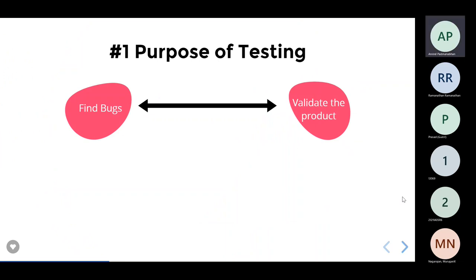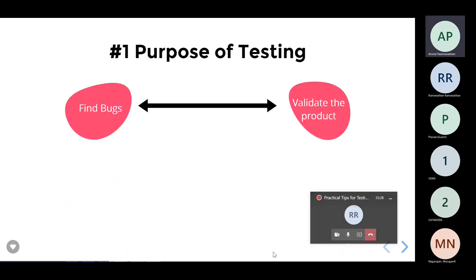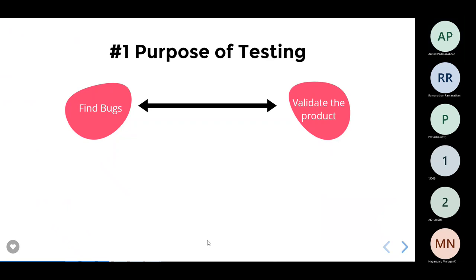Let's start with the first tip: what is the purpose of testing? Is it to find bugs or is it to validate the product? If you ask testers, they will say it is to find bugs. But if you take a developer's perspective, the developer is optimistic — the view is that the product is working well and there are no significant bugs, so the developer's perspective is to validate the product.